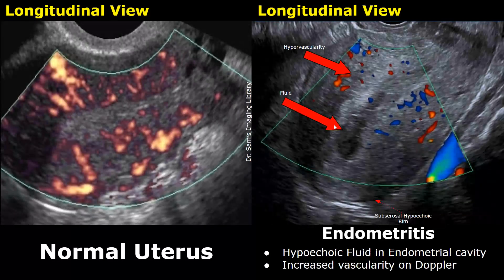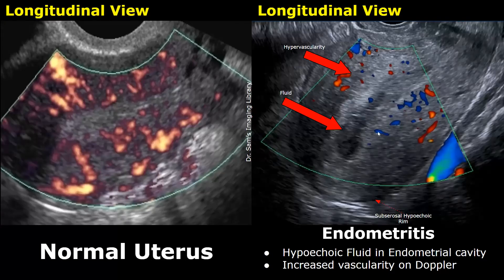In this image on the left, power Doppler is applied to detect slow blood flow in the uterus. In the image on the right, color Doppler is applied. The endometrial cavity is filled with hypoechoic fluid and a subserosal hypoechoic rim is also present. When these two features are present, you may find increased vascularity in and around the endometrium due to inflammation.